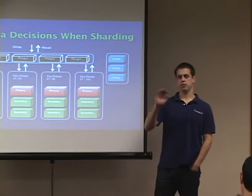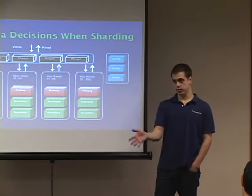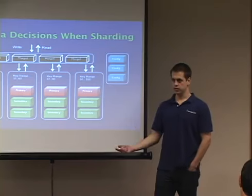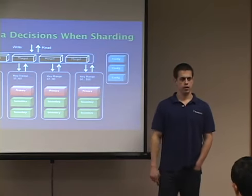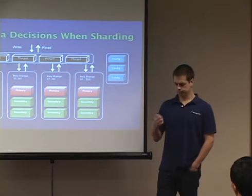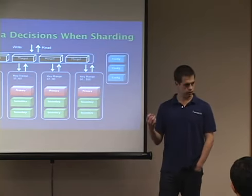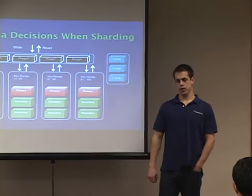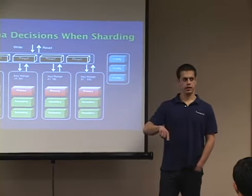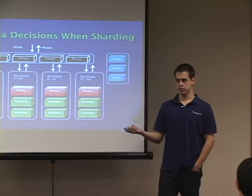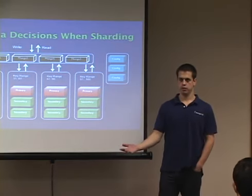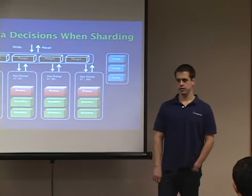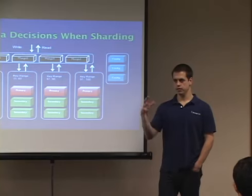As well as the multi-data center deployment stuff, that's a big feature in 2.2. Improved concurrency is another big feature in 2.2. We're also moving from SpiderMonkey to V8 as the JavaScript engine, so it should make MapReduce JavaScript even faster. Those are kind of the big ones.